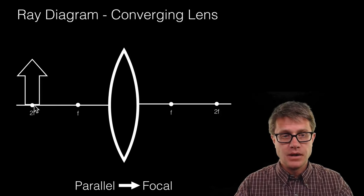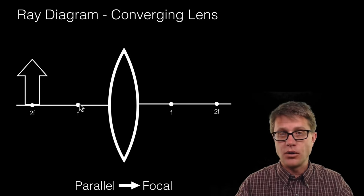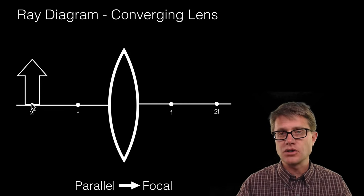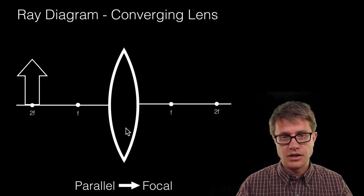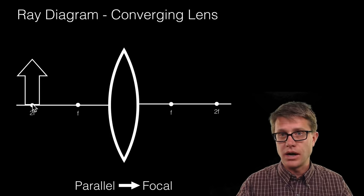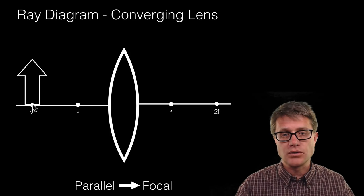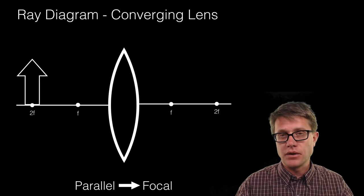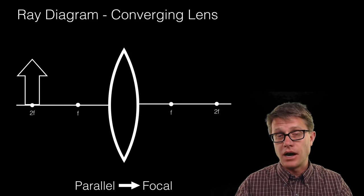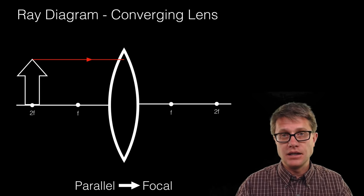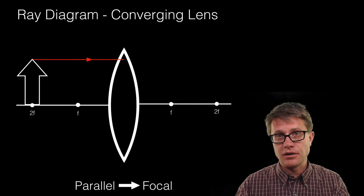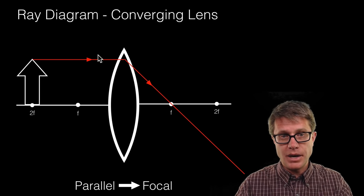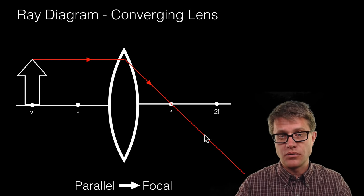Now let's get to a converging lens and figure out where the image is going to be. There are a few things to define: we have 2f and f, where f stands for the focal point and 2f is two times the focal point. For mirrors we sometimes call 2f the center of curvature. To draw the ray diagram, the light goes through the lens — glass on the inside, air on the outside. We start by taking the top of the object and drawing a parallel line into the lens, then going through the focal point on the other side. That ray bends or refracts right at the lens and goes through the focal point.